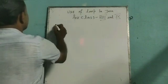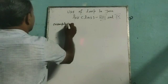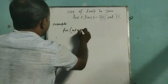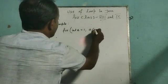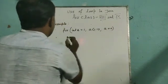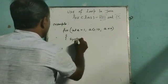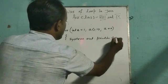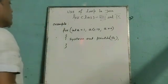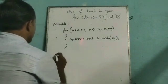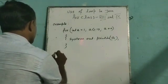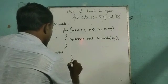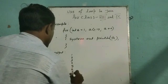We will see now one example of for loop. For open bracket, int a equal to 1 semicolon, a less than equal to 10 semicolon, a plus plus, close bracket. Then we put one opening brace, then write system.out.println bracket a semicolon, then we put one closing brace. Now let me write the output. If we write this part of program, what output will be generated? 1, 2, 3, 4, till 10 will be printed on the screen.